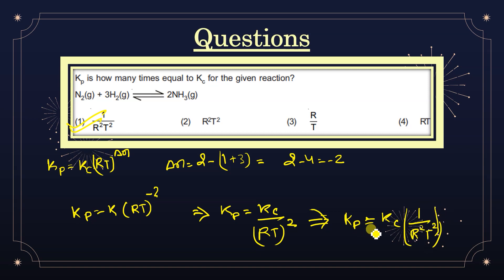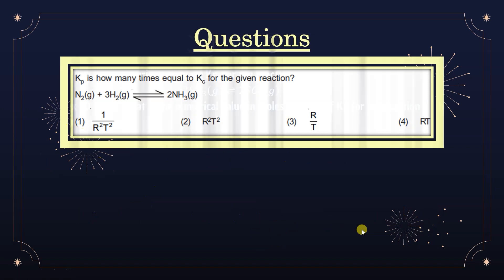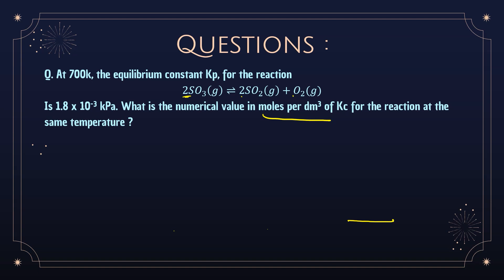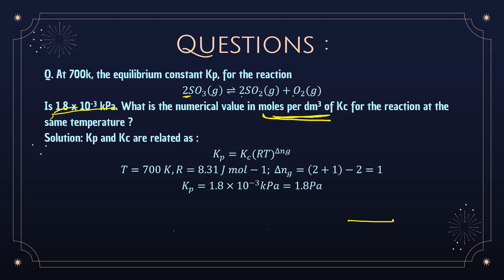Next question: At 700 K the equilibrium constant Kp is given for the reaction 2SO3(g) ⇌ 2SO2(g) + O2(g). Find the numerical value of Kc at the same temperature. Find Δng: product moles = 2+1 = 3, reactant moles = 2, so Δng = 1. T = 700 K, R = 8.314 J/K/mol. Convert the given Kp from kPa to Pa.